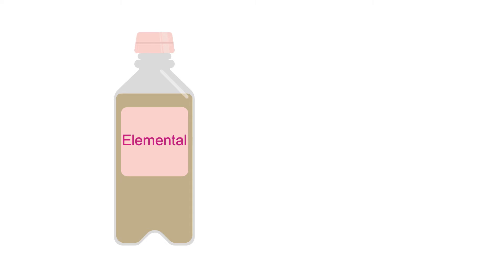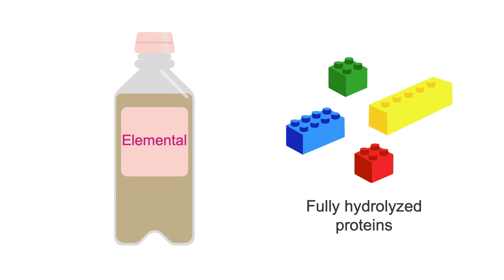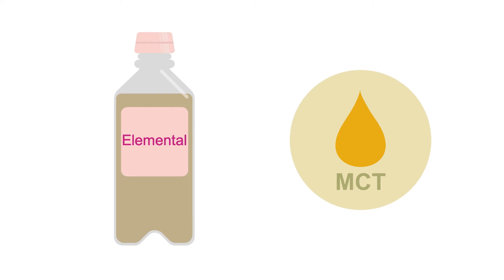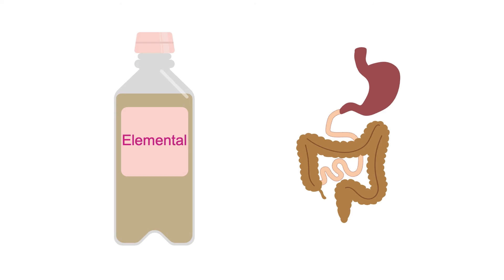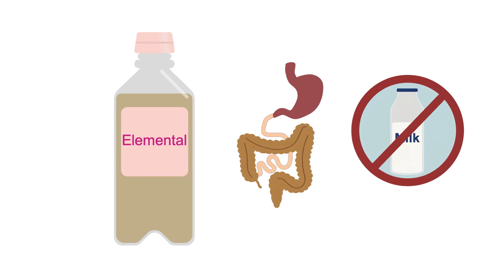The third type is elemental, also known as hydrolyzed. The protein in elemental tube feeds is fully hydrolyzed, meaning it's been broken down to its simplest form, requiring minimal digestion. Elemental formulas also have a very high ratio of MCT oil to regular oil. This type of formula is used infrequently because most patients are well-suited for standard or semielemental tube feeds. However, elemental formulas are appropriate in the case of severe malabsorptive states like short gut syndrome, or in the case of milk protein allergies — not to be confused with lactose intolerance.